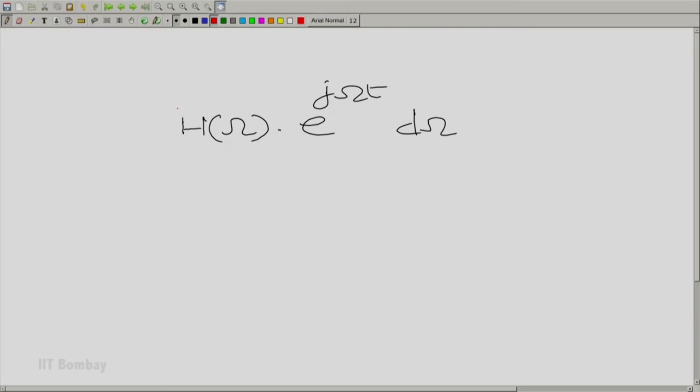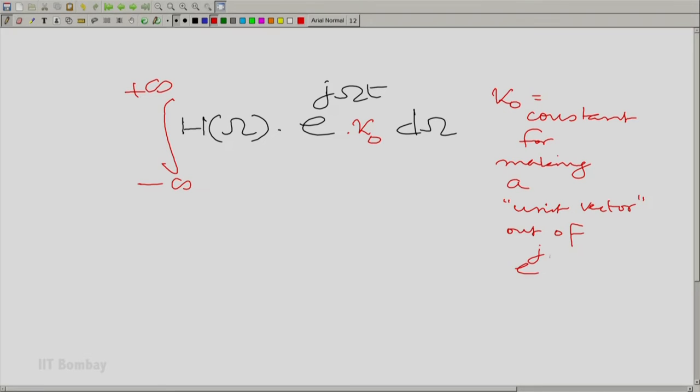Component H(ω) multiplied by unit vector and integrated instead of being added. Identify each step of this very carefully. Integrated from minus to plus infinity and a constant, a constant could be a function of omega or may not be a function of omega. Let us write down a constant, call it constant κ₀. κ₀ a constant for making a unit vector out of e raised to power jωt. This should give me back h(t). This is what we call the inverse Fourier transform. This is how far the intuition took us.